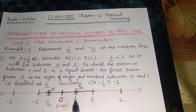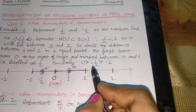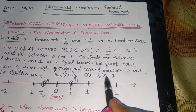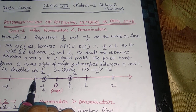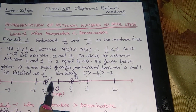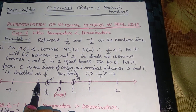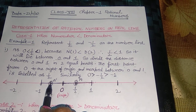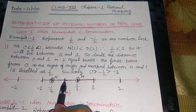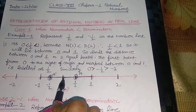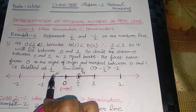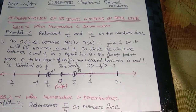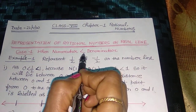So point A is representing 1/2. Similarly, if you have to represent minus 1/2 — since minus 1/2 is a negative rational number, it will be less than 0 but greater than minus 1, so it will lie between 0 and minus 1. Therefore, we will divide the distance between 0 and minus 1 into two equal parts. The first point from 0 to the left of 0, marked between 0 and minus 1, is labeled as minus 1/2. So point A' is representing minus 1/2. That is the representation of rational numbers in which the numerator is less than the denominator.